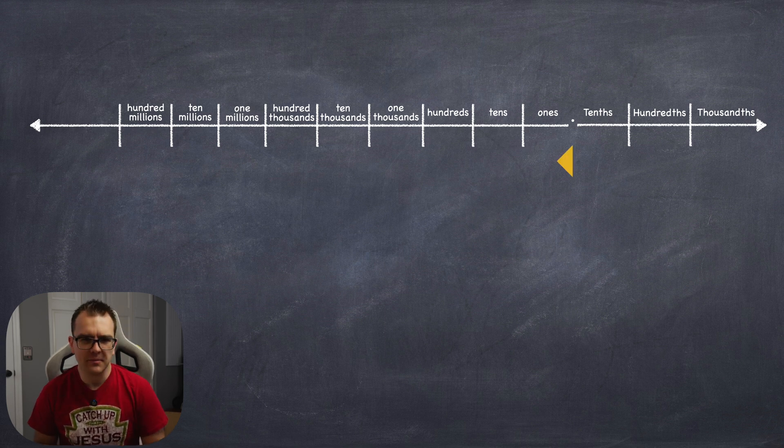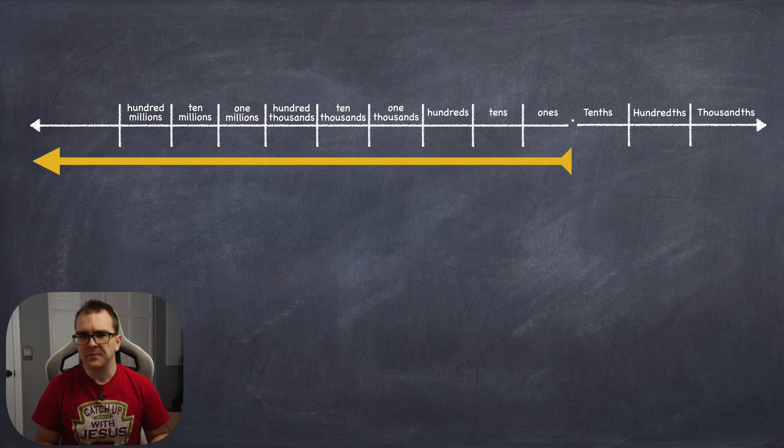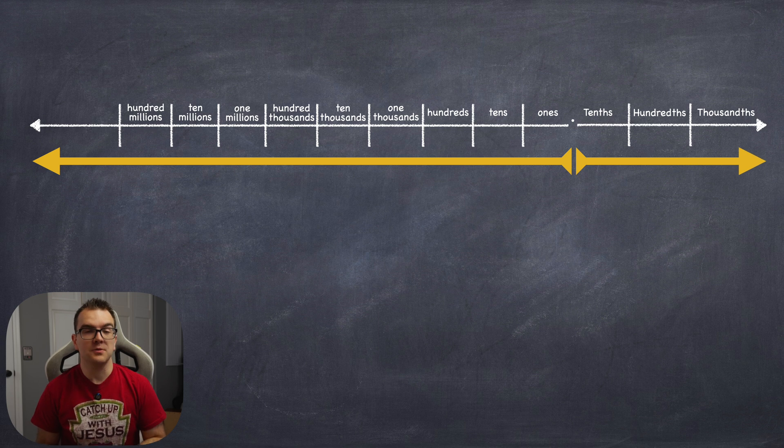So here's the thing to remember. Left of the decimal equals whole numbers: ones, tens, hundreds, thousands, etc. And right of the decimal equals fractions of a whole: tenths, hundredths, thousandths, and so on.